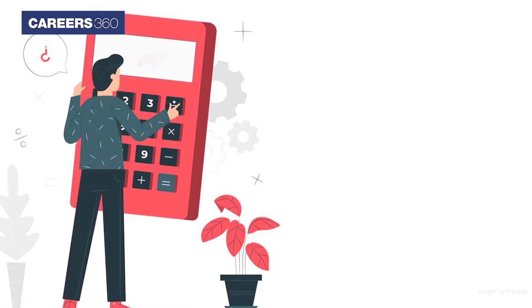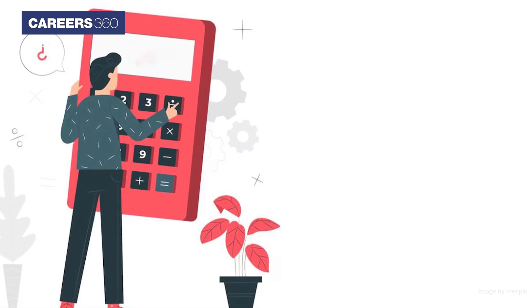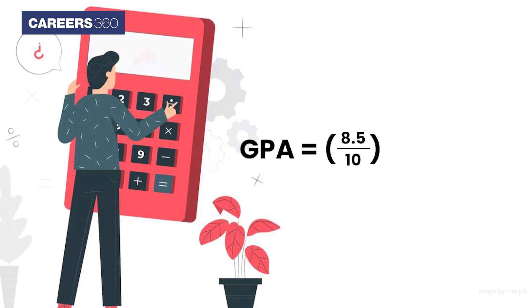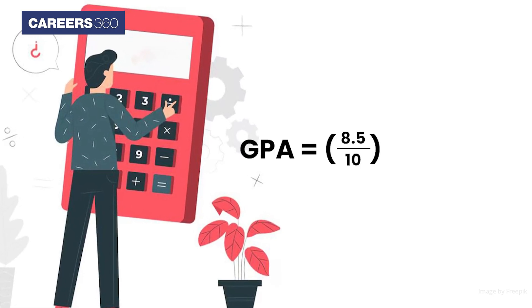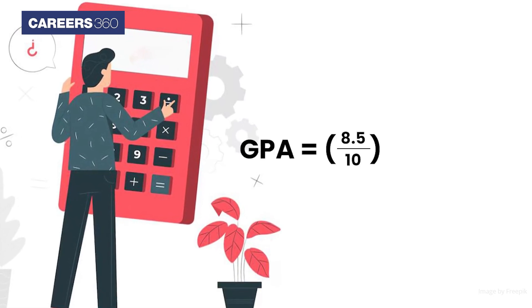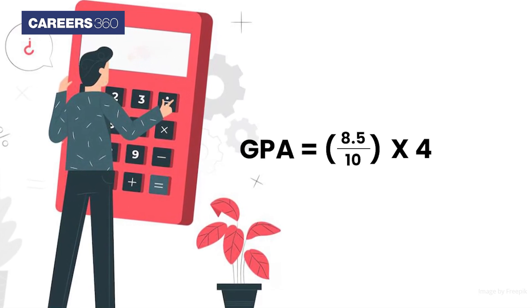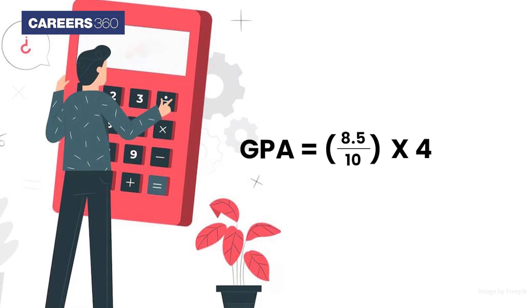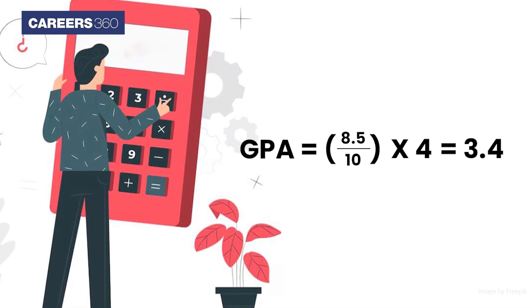For example, if you have a CGPA of 8.5, dividing by 10 gives 0.85, and multiplying by 4 gives 3.4. Therefore, a CGPA of 8.5 converts to a GPA of 3.4.